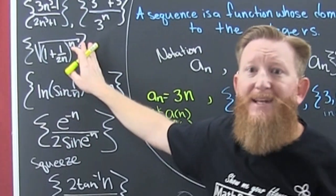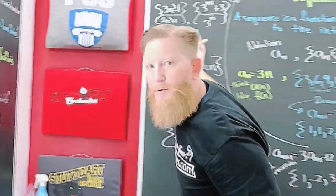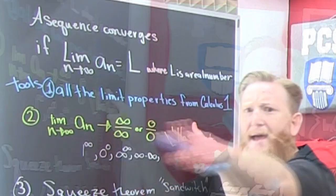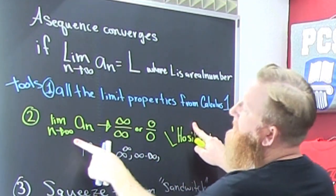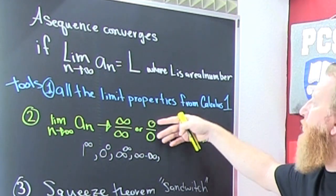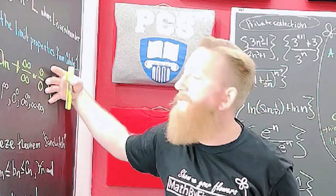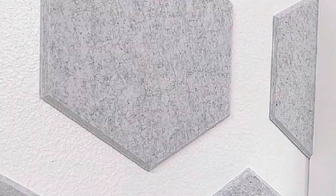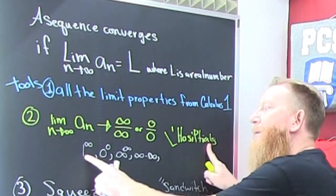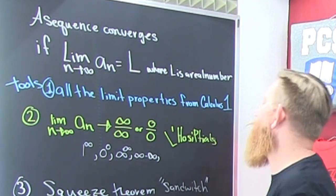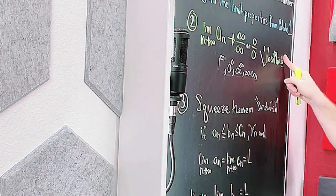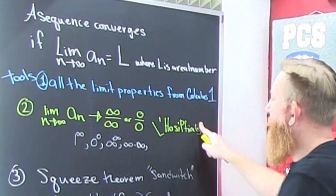But some limits won't work with ordinary limit properties. The second tool is: if the limit as n goes to infinity gives you an indeterminate form like infinity over infinity or zero over zero, your spider senses should tingle — you can use L'Hôpital's rule. Remember, if you have these indeterminate forms, you may need to do some algebraic operations first before you can apply L'Hôpital's.